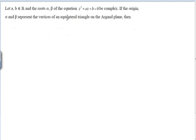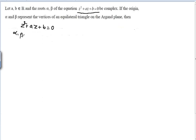Next problem: Let a, b belong to R and let alpha, beta be the roots of z² + az + b = 0, which are complex numbers. The origin, alpha, and beta form an equilateral triangle in the Argand plane. By Vieta's formulas: alpha + beta = -a and alpha · beta = b.